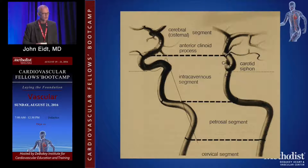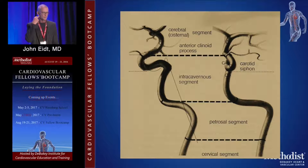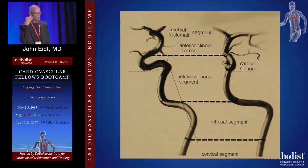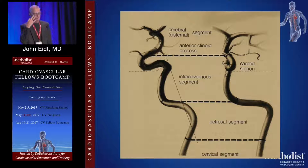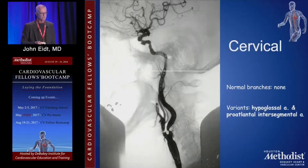Segments of the carotid artery — fancy books have it in seven segments. Vascular surgeons almost always will just call it a cervical segment, meaning up to the base of the skull; a petrosal segment through the bone; and the cavernous segment as it goes up behind your nose, then the terminal segment beyond that. That's usually what people will say.